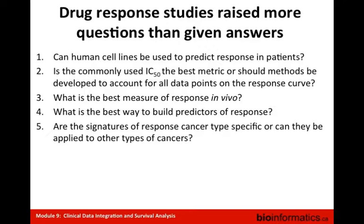Drug response studies have raised more questions than answers. It is still unclear whether human cell lines can adequately serve as a starting point to develop markers of response that can later be applied to patients. Key open questions include: what metrics should be used for cell lines — IC50, GI50, or the full response curve? What is the best measure of response in vivo, given multiple available patient metrics? And whether signatures of response are specific to a particular cancer type or can be applied cross-cancer types.